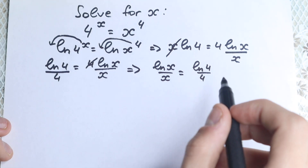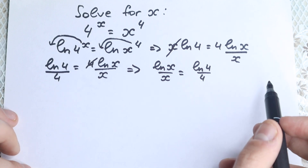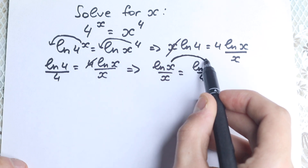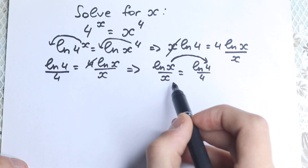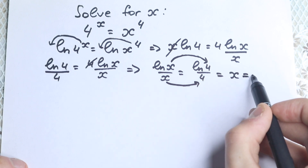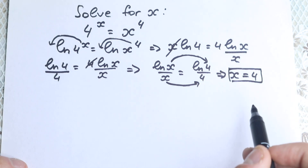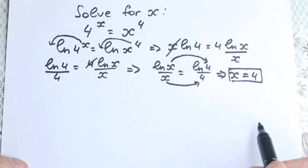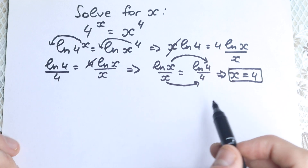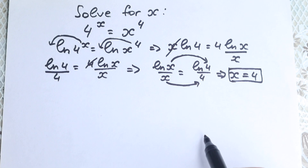Now we can see the obvious solution. If natural log(x)/x equals natural log(4)/4, one direction gives natural log(x) equal to natural log(4), so x equals 4. This is our first, obvious solution. But since we have a fourth power, we could have up to 4 roots, so let's find them all.